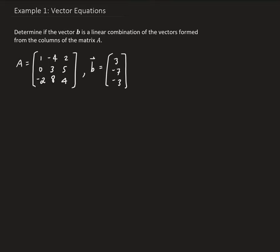In this example, we want to determine if the vector B is a linear combination of the vectors formed from the columns of the matrix A. For the matrix A, we have three column vectors that form this matrix.